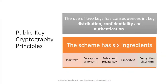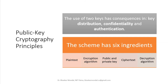Public key cryptography principles: the use of two keys has consequences in key distribution, confidentiality, and authentication. We have two keys — public key and private key — so it impacts how you distribute them, how you maintain confidentiality, and how public key is used for authentication. The six ingredients are: plaintext, the encryption algorithm, the key pair (public and private), ciphertext, and the decryption algorithm.